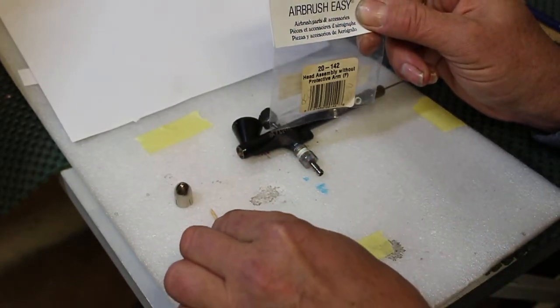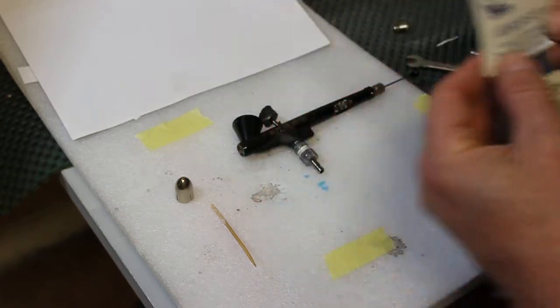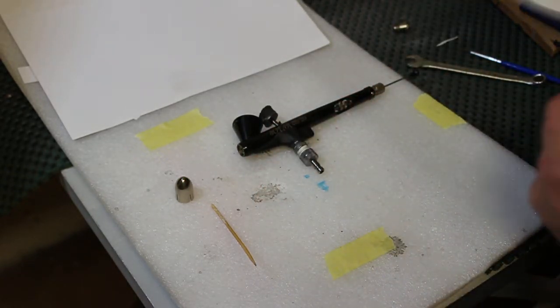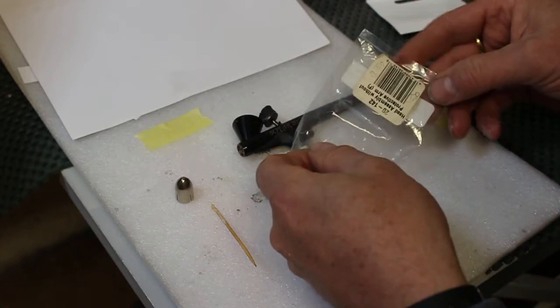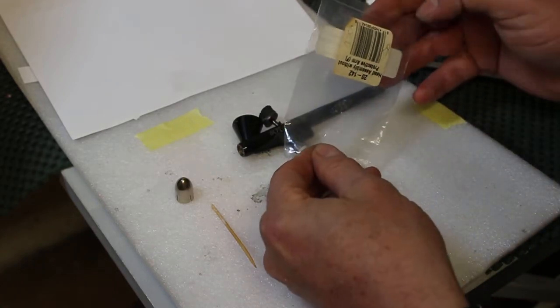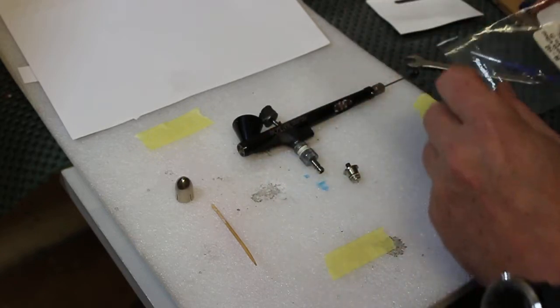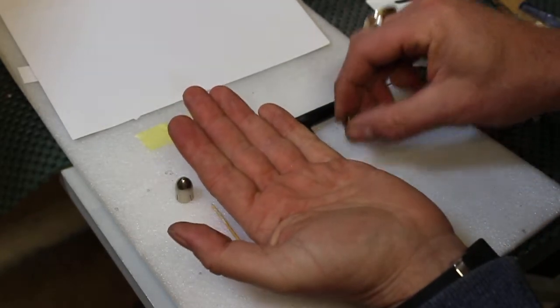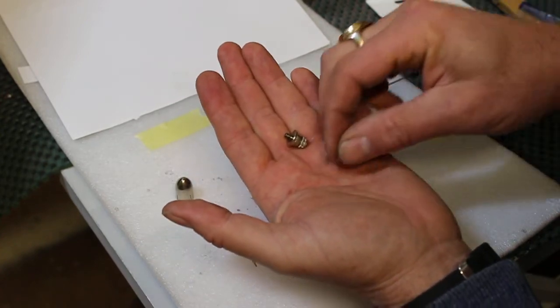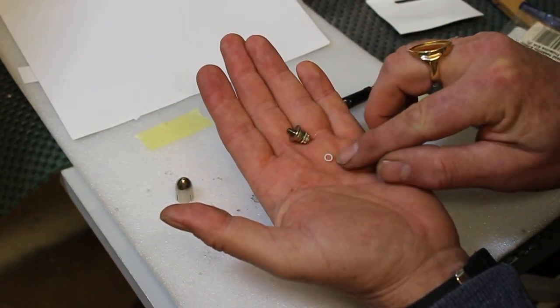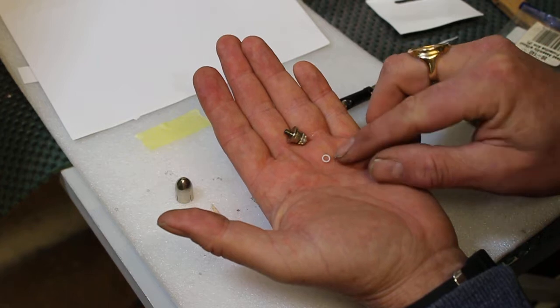So if we just take this out, we'll just drop it onto the table. And you can see there that we have the whole assembly and the new PTFE ring, I think it's called, plastic ring.